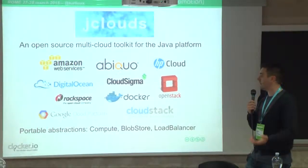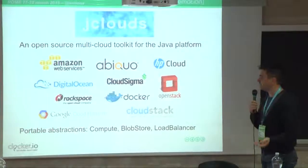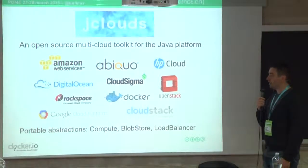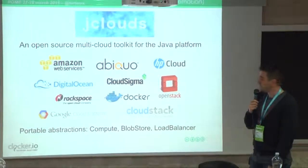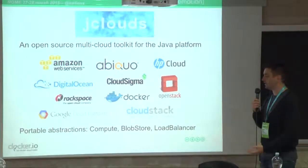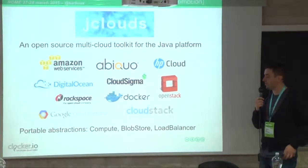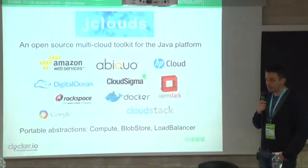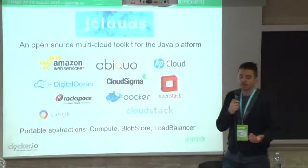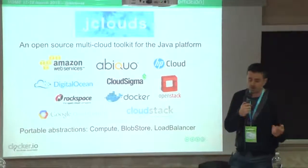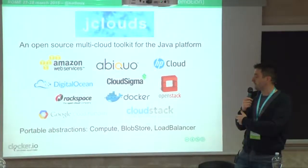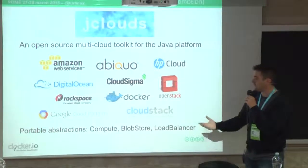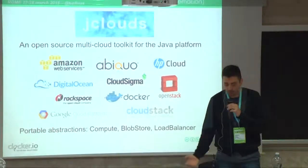jClouds supports major cloud technologies including Amazon Web Services, HP Cloud, DigitalOcean, and Google Compute Engine. We are working on Microsoft Azure for the next release. The entire jClouds library is organized around three main abstractions: compute, blob store, and load balancer — because an infrastructure-as-a-service cloud provider generally offers those kinds of features, and jClouds abstracts them away.